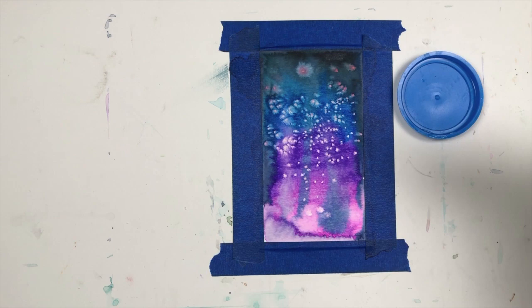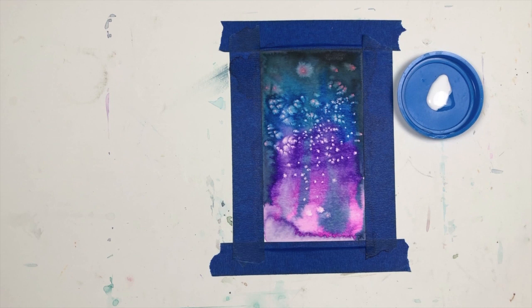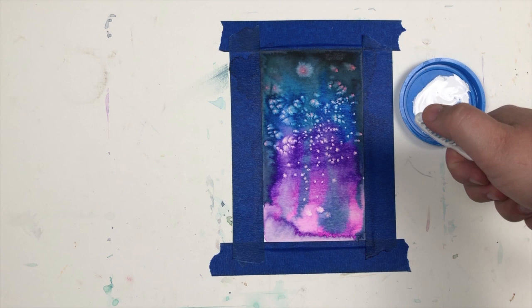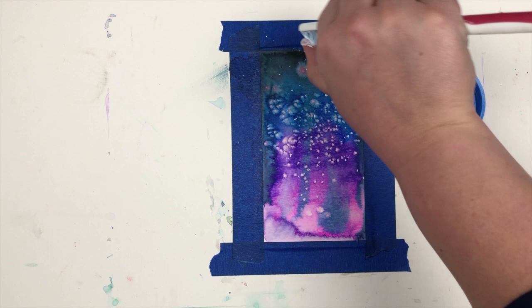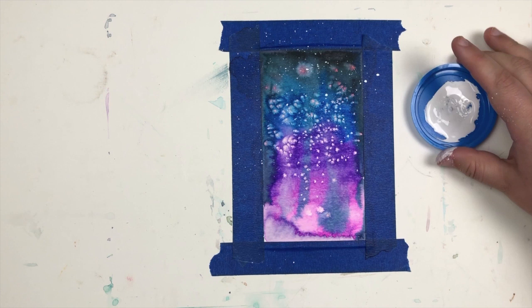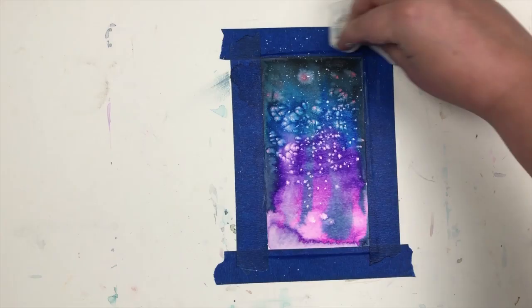Next, we are going to add some stars. Pour out a little bit of white paint and add a drop or two of water to thin it out. Mix it up with your old toothbrush and coat the toothbrush in paint. You will splatter paint some stars by pulling the bristles of the toothbrush back and then letting go. Clean up any splatters on the tape or on your table before they dry so you don't accidentally make a mess or smudge up your painting.